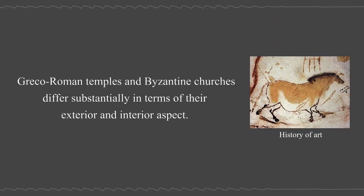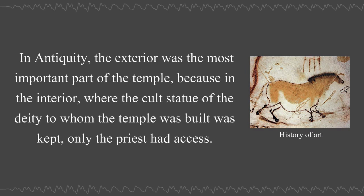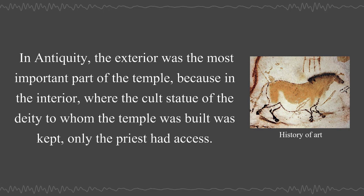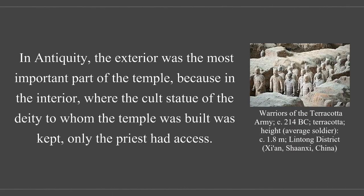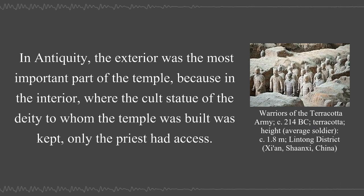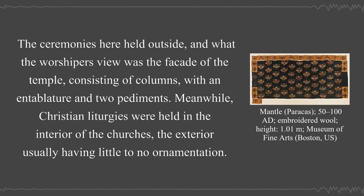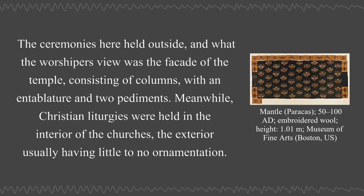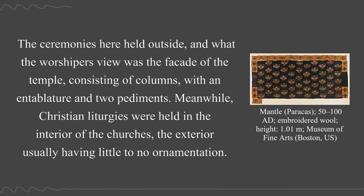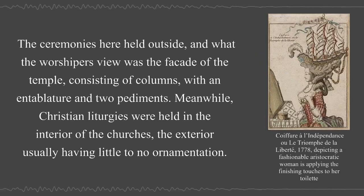Greco-Roman temples and Byzantine churches differ substantially in terms of their exterior and interior aspect. In antiquity, the exterior was the most important part of the temple, because in the interior, where the cult statue of the deity was kept, only the priest had access. The ceremonies were held outside and what the worshippers viewed was the facade of the temple consisting of columns with an entablature and two pediments. Meanwhile, Christian liturgies were held in the interior of the churches, the exterior usually having little to no ornamentation.